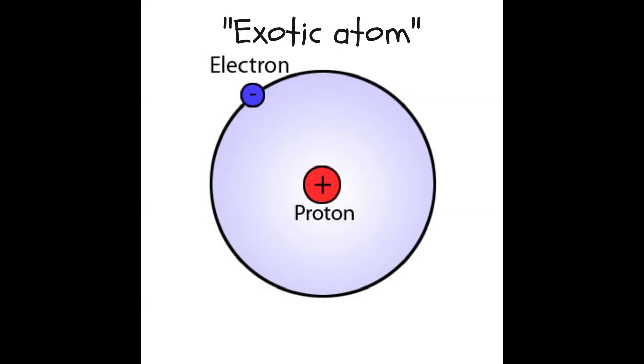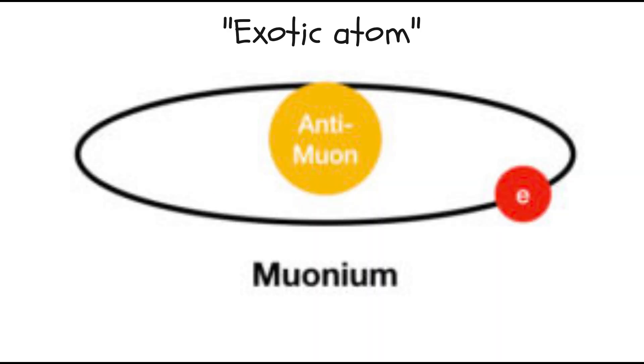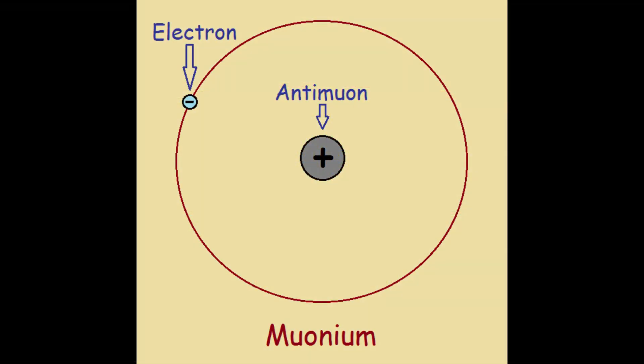It can form an exotic atom with the electron orbiting around the positively charged anti-muon which can act as the nucleus. This system can be called a bound state of electron and anti-muon.